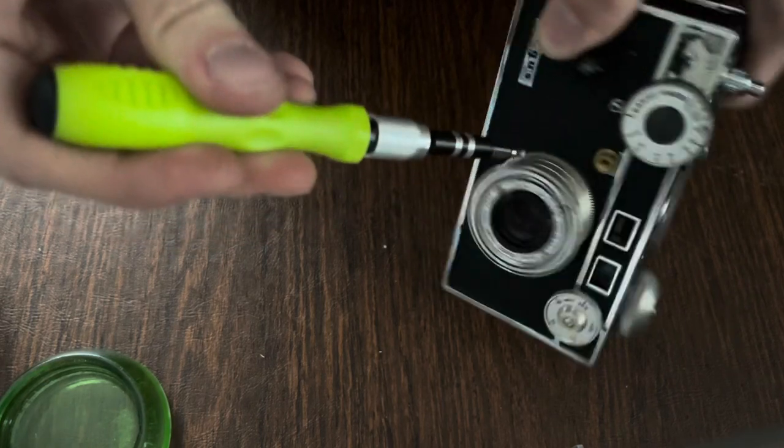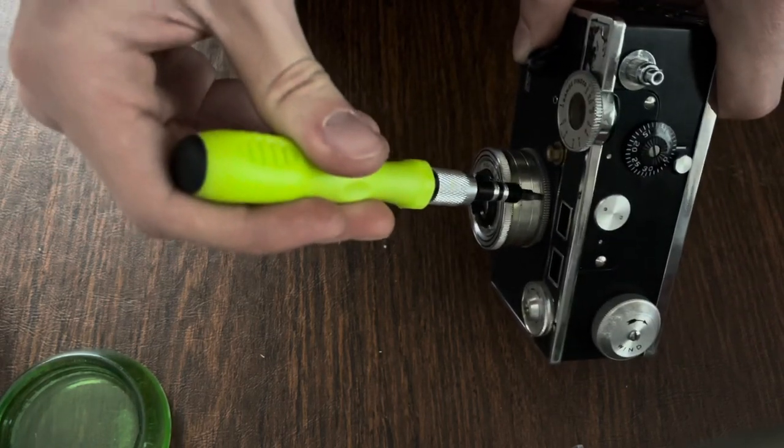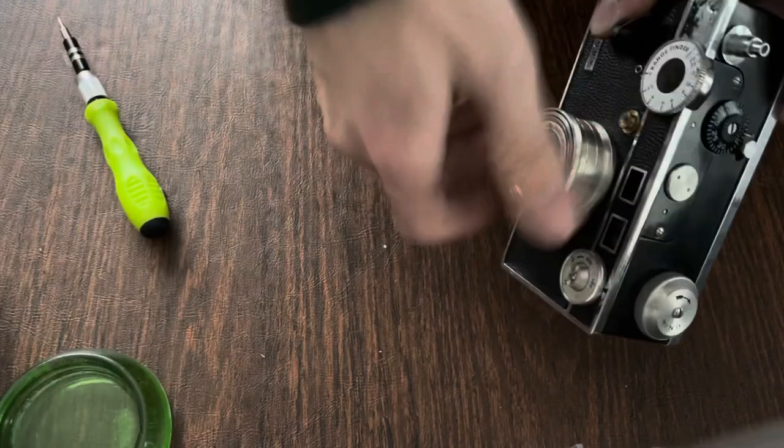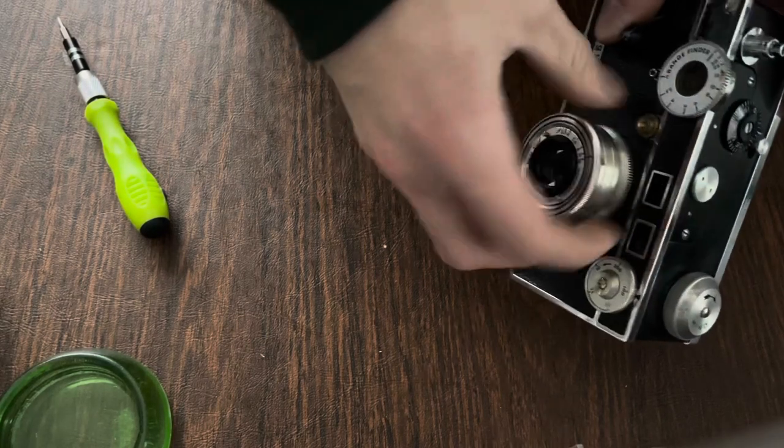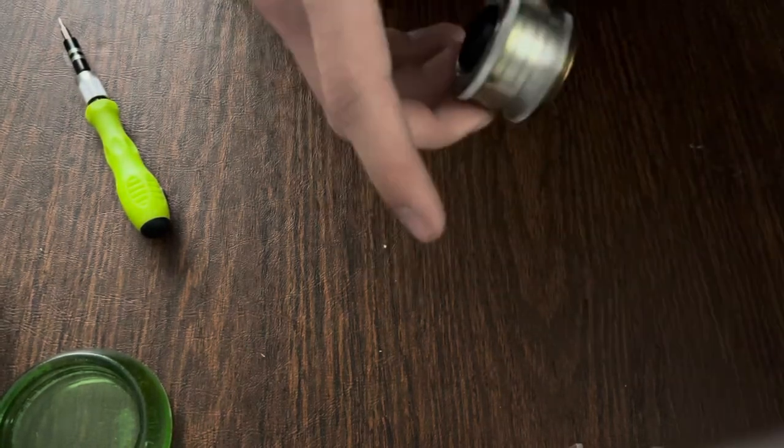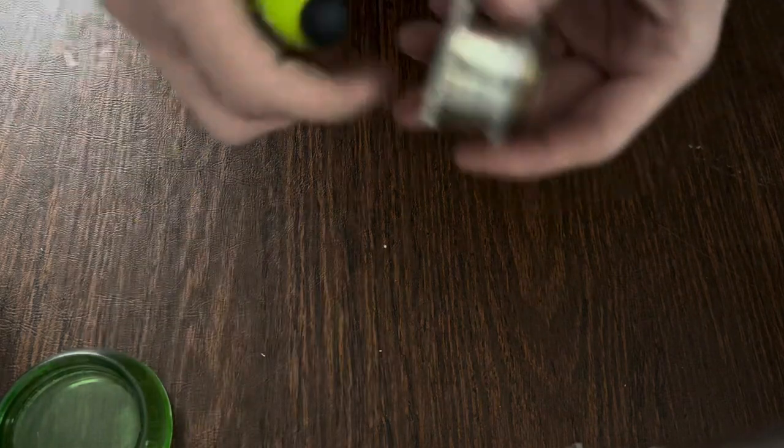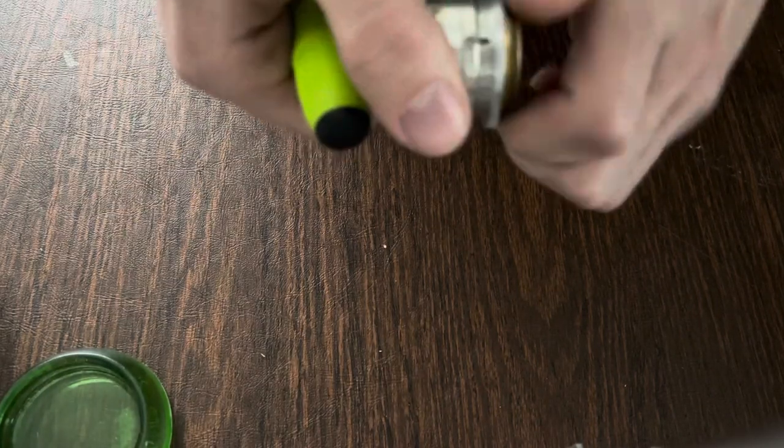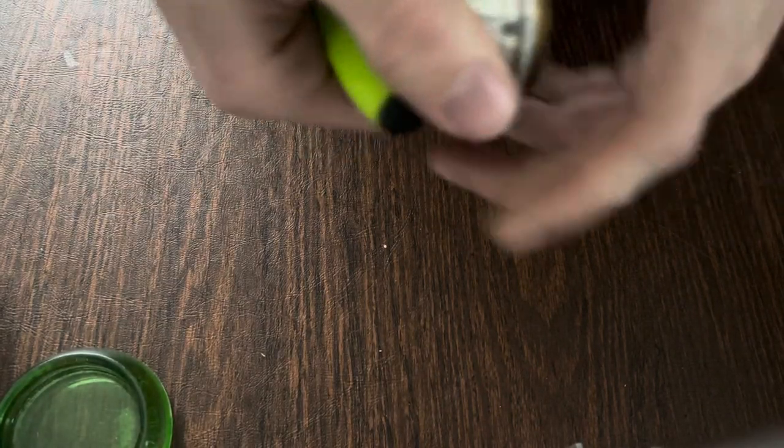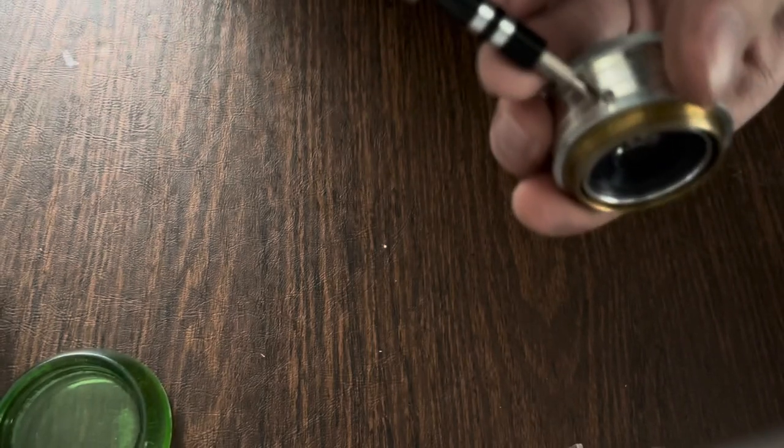The way that you fix that is you unscrew the lens once more and go through the last few steps all over again. Bring that all the way down, unscrew the screw again, again not losing it.